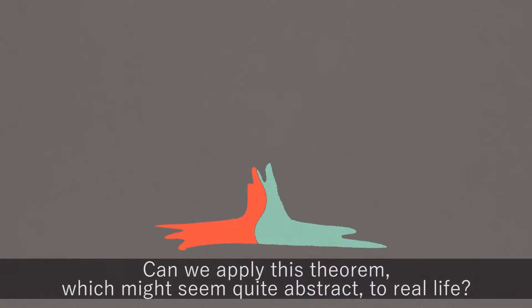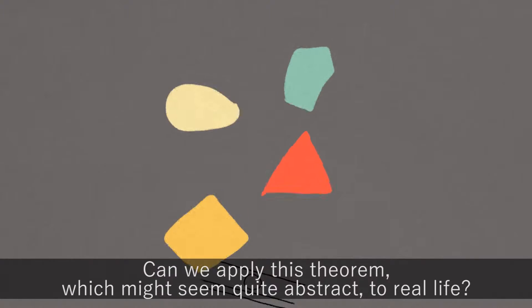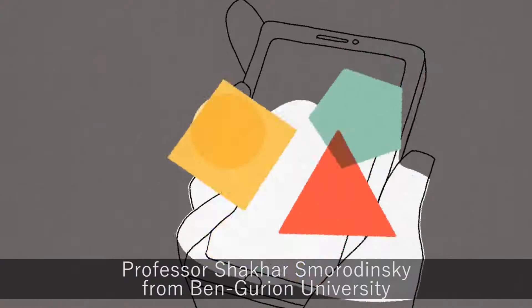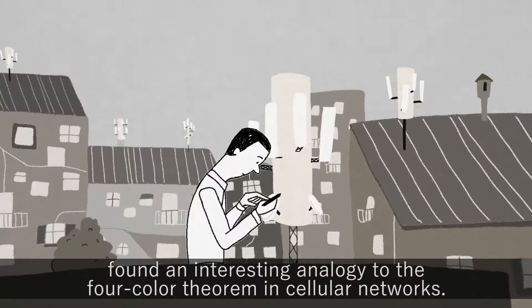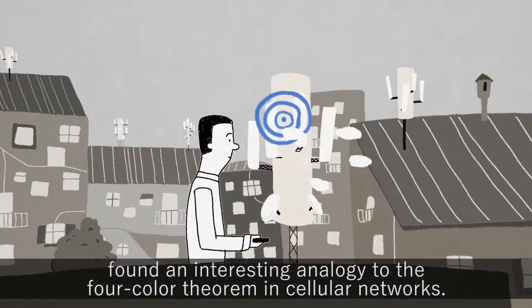Can we apply this theorem, which might seem quite abstract, to real life? Professor Shahar Smordinsky from Ben-Gurion University found an interesting analogy to the four-color theorem in cellular networks.